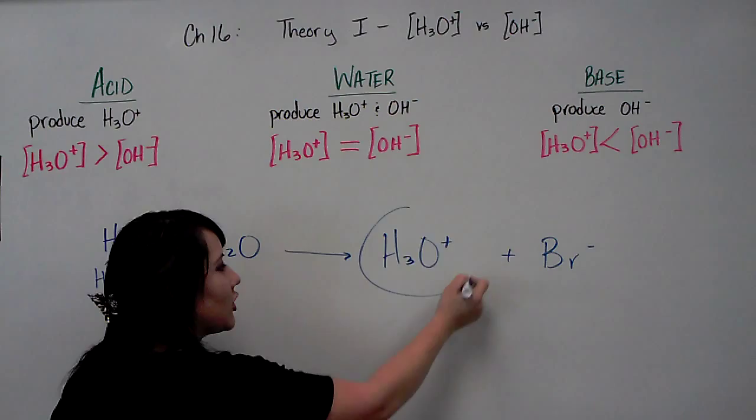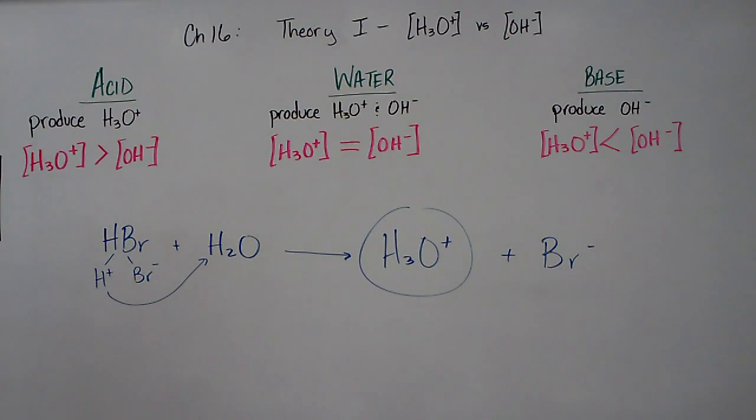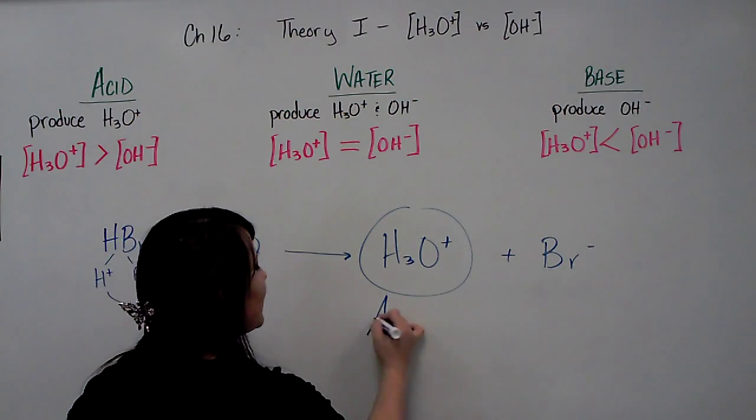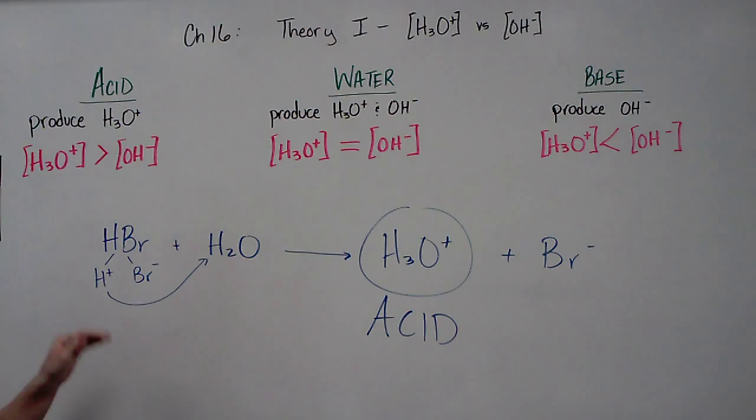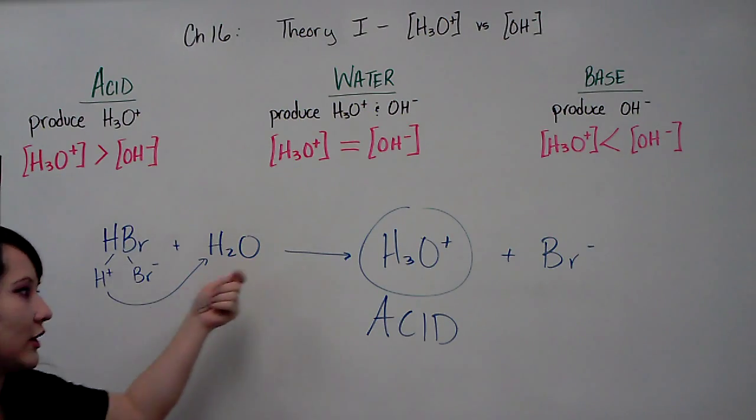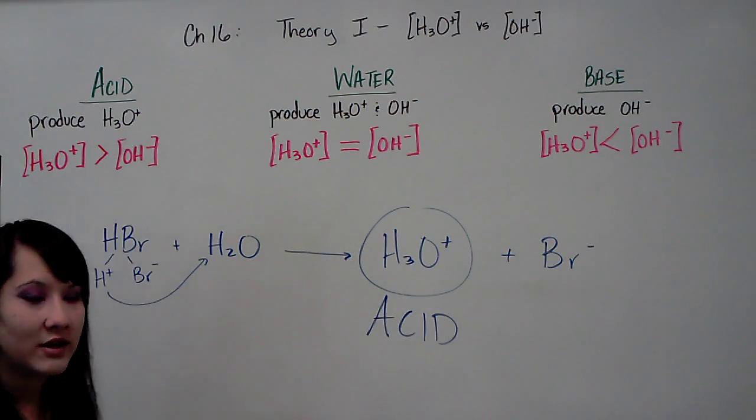It is the production of this hydronium ion whenever HBr ionizes in water that makes this considered an acid. So any substance placed in water or any substance that produces hydronium ions is going to be considered an acid.